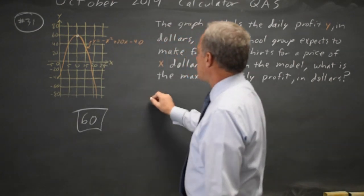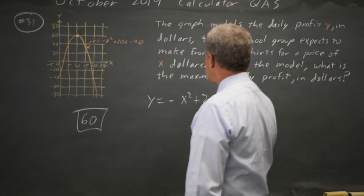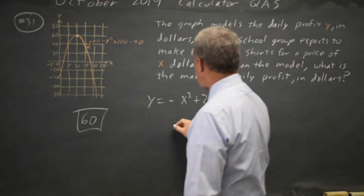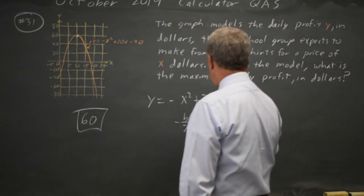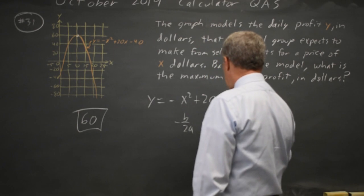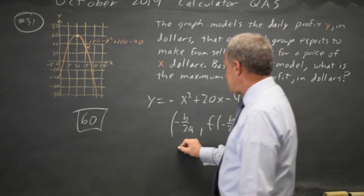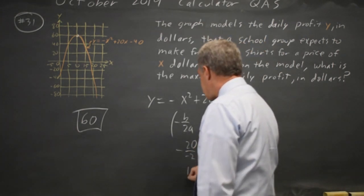Or we can algebraically take y equals negative x squared plus 20x minus 40, where we know the maximum occurs at negative b over 2a and f of that value. And negative b over 2a is negative 20 over twice negative 1 is negative 2, which is 10.